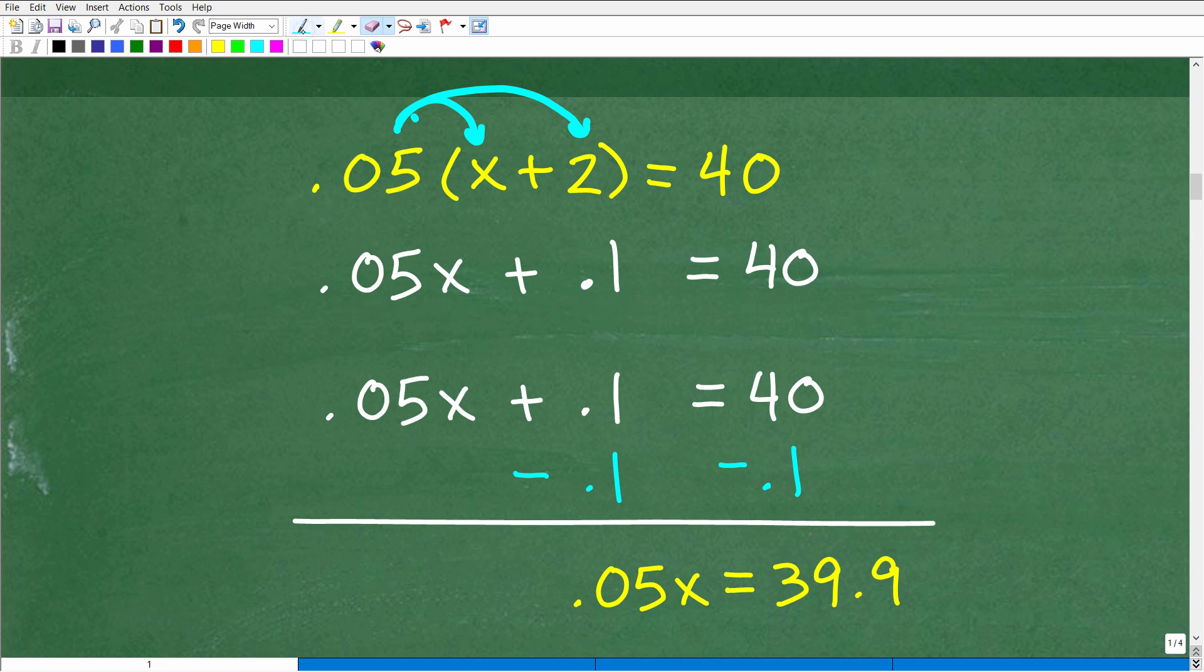So remember when you're solving equations, what you want to do is get the variable, all the variable terms on the left, all the number terms on the right. So we have 0.05x plus 0.1 is equal to 40. So let's get this 0.1 over to the other side. How can we get rid of this 0.1? Easy. We'll just subtract it away. But remember in algebra, whatever you do to one side of the equation, you have to do the exact same thing to the other side.